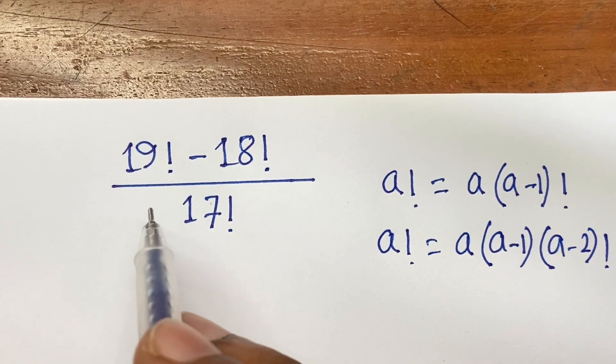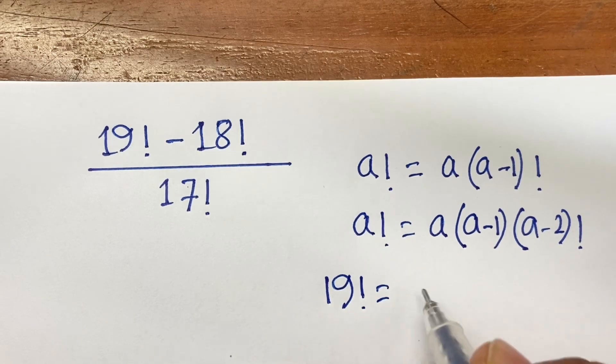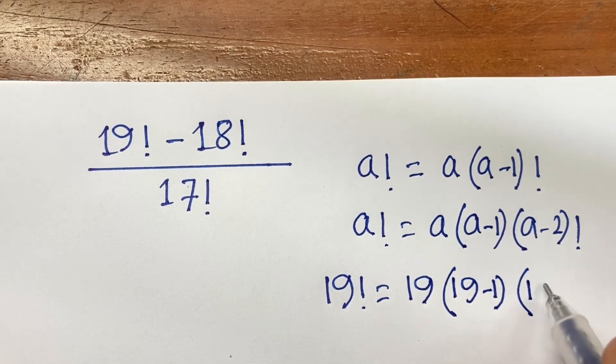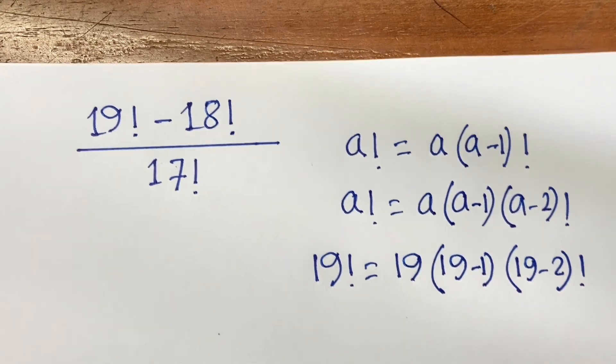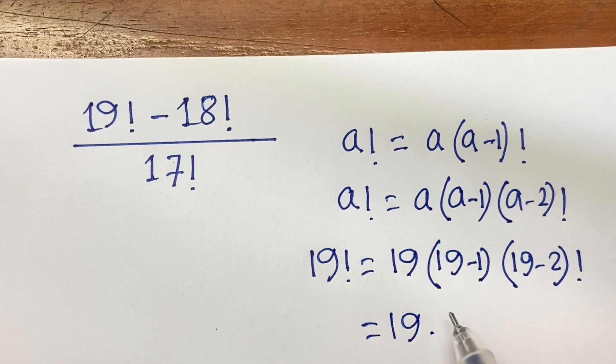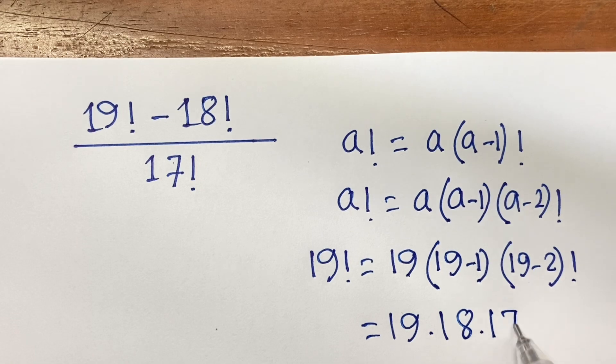Now here is 19 factorial. So I can say 19 factorial equals 19 times 19 minus 1, 19 minus 2 factorial. So here is 19 times 19 minus 1 equals 18, and 19 minus 2 equals 17 factorial.